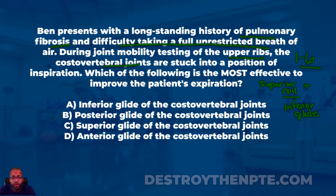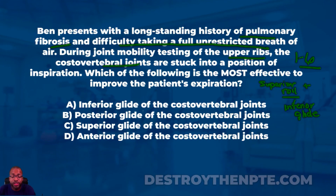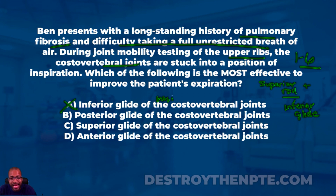The question asks which is most effective to improve expiration. Our patient is stuck into a superior roll and inferior glide position, so I need an intervention that will produce an inferior roll and superior glide. Answer A says inferior glide — probably not correct. If I do an inferior glide, it will help produce a superior roll, and a superior roll means inspiration, not expiration. So A cannot be the correct answer.